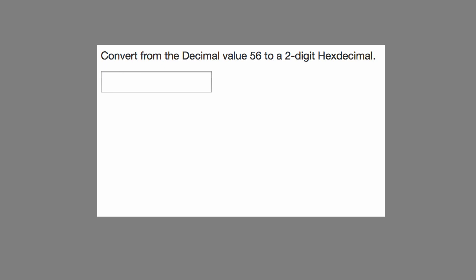Convert from the decimal value 56 to a two-digit hexadecimal. So we know our output is going to have two digits. And we know that this is the ones place.